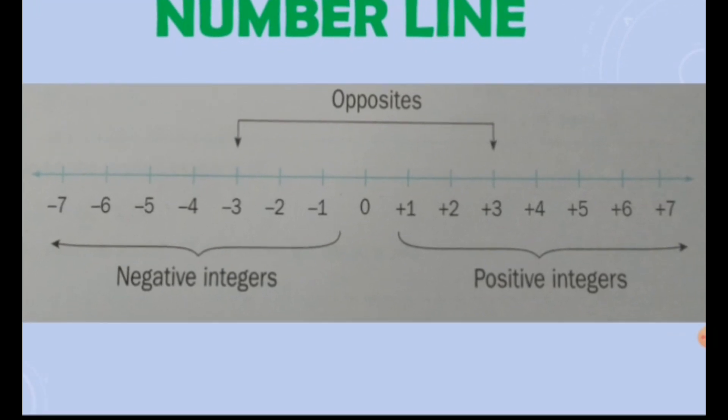Now you would be thinking, 0 is in middle and at the right side, there are positives and at the left side, there are negatives. Then what is 0? Is it a positive or is it a negative? So, to clear your doubt, I can tell you that 0 is not a positive number and not a negative number.